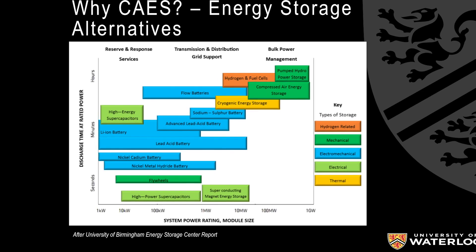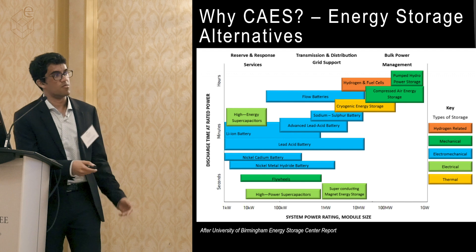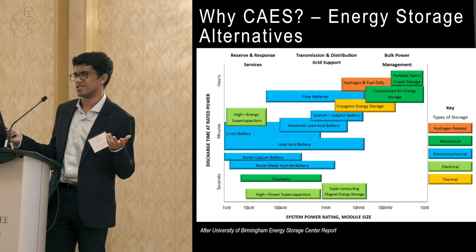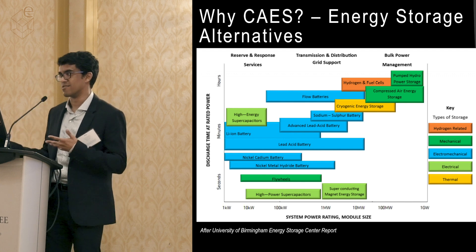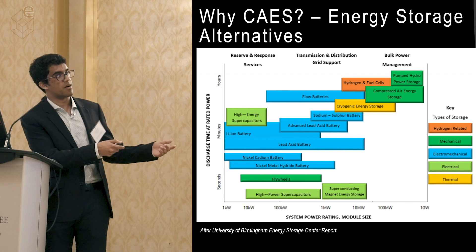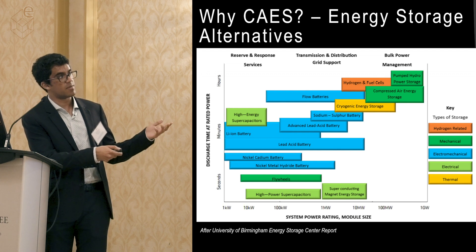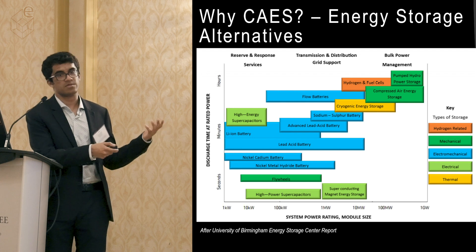So where does CAES fit in all this? CAES can be thought of as a mechanical form of energy storage, most effective in the context of 10 megawatts to a gigawatt of power, delivering energy on the scale of hours. When most people think of power storage, they think of batteries — your car battery, laptop battery, or cell phone — chemical batteries like lithium-ion or lead-acid. These are great for small-scale power, but when it comes to delivery, you're on the scale of minutes, which isn't really adequate for a grid.